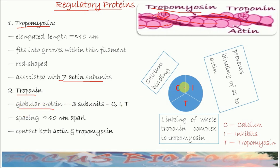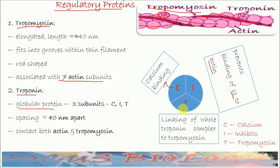Troponin is a globular protein that has three subunits: one is called troponin C, another is called troponin I, and another is called troponin T. The C subunit is the calcium-binding subunit, as calcium ions bind with this subunit. Troponin I inhibits the binding of the S1 myosin head to the actin molecule. Troponin T links the whole troponin molecule to tropomyosin.